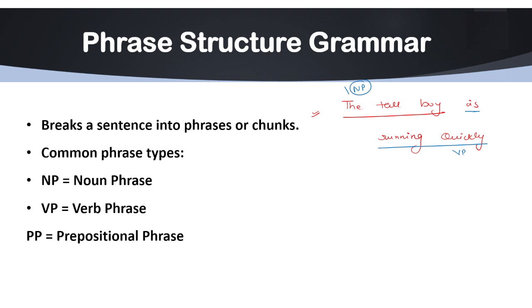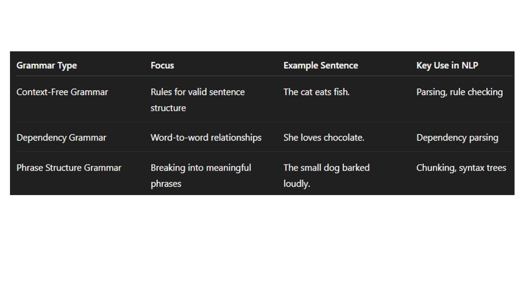I hope every point is clear to you. These are the four important types of grammars under NLP. Now we have differences between these three. If we talk about context-free grammar, it focuses on rules for valid sentence structure. The cat eats fish. Key use in NLP is parsing or rule checking. Basically, context-free grammars are used to check the parsing and sentence structure rules.